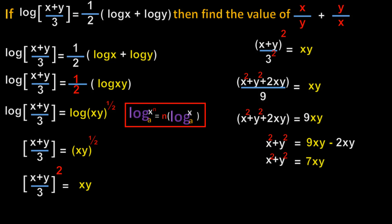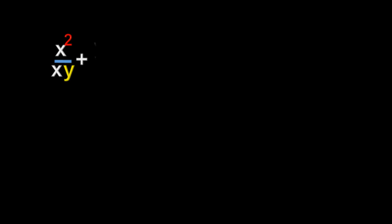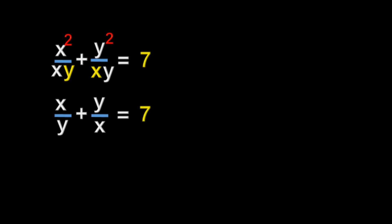Now transposing the product xy to the left hand side by dividing, we get (x² + y²) / xy = 7. By writing this as x²/xy + y²/xy = 7, on the left hand side in the first term x is the common factor for numerator and denominator, so cancelling gives x/y. In the second term y is the common factor, so cancelling gives y/x. Therefore the required value of x/y + y/x = 7.